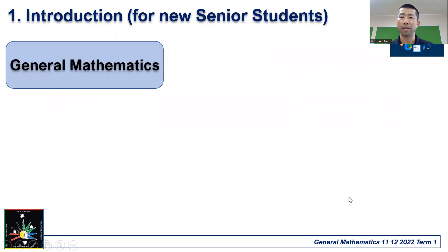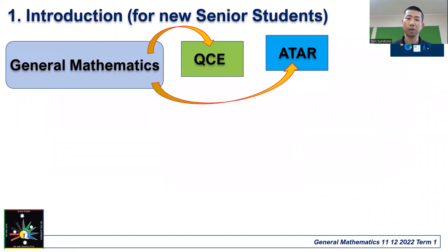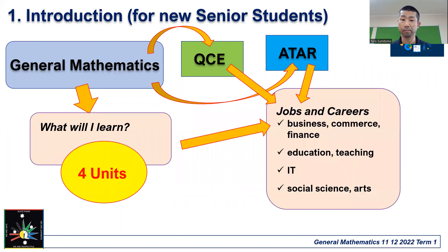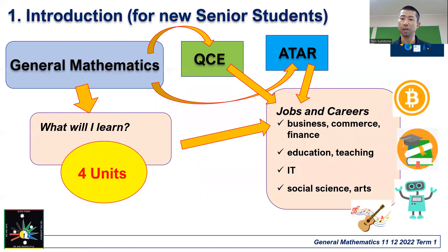So, General Mathematics — why are we doing it? Because it provides a QCE and ATAR pathway, which is very important. What will you learn? There are four units of work. And let's talk about what sort of jobs and careers it can lead to: business, commerce and finance, education and teaching, IT jobs, and also social science and arts.